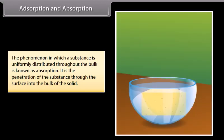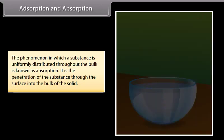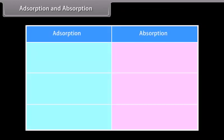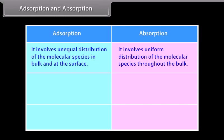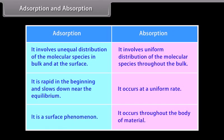The phenomenon in which a substance is uniformly distributed throughout the bulk is known as absorption — it is the penetration of the substance through the surface into the bulk of the solid. For example, when a sponge is dipped in a liquid, it absorbs some molecules of liquid. Key differences: adsorption involves unequal distribution at the surface, whereas absorption involves uniform distribution throughout the bulk. Adsorption is rapid initially and slows near equilibrium, whereas absorption occurs at a uniform rate. Adsorption is a surface phenomenon, whereas absorption occurs throughout the body of the material.